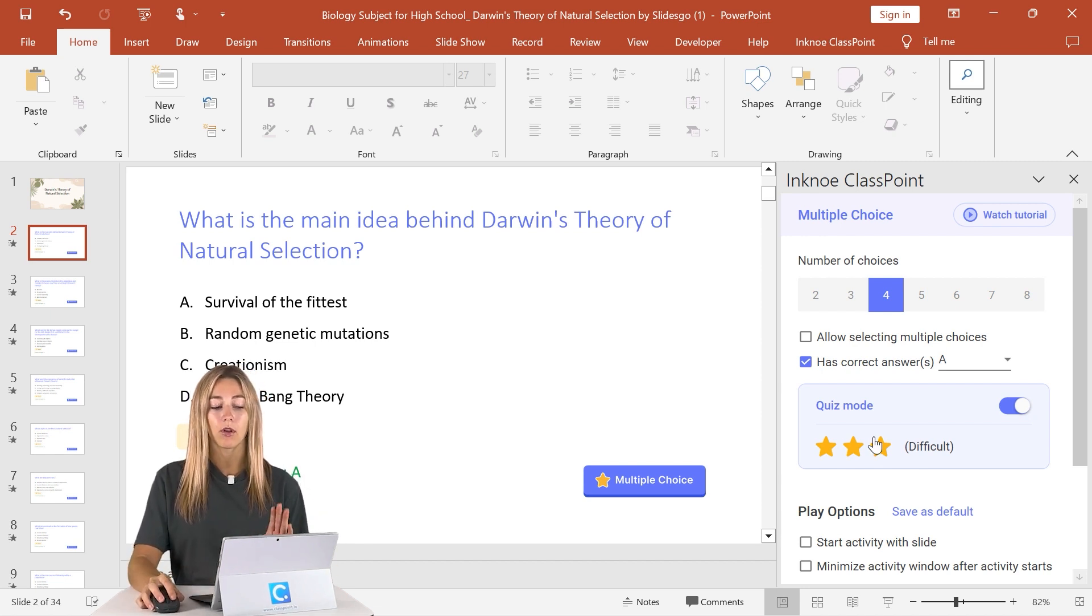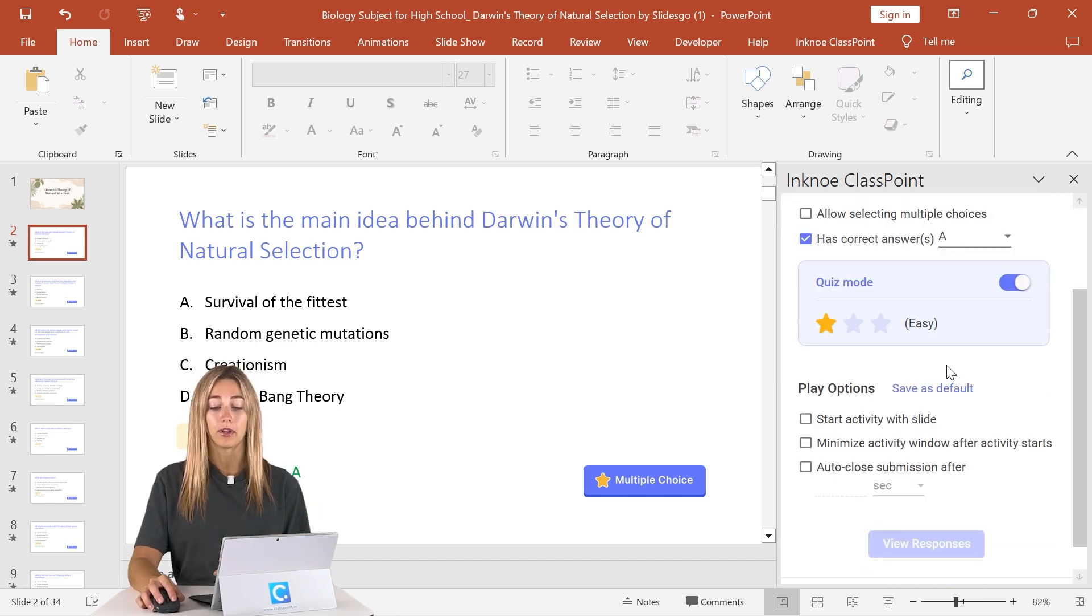So this question is pretty simple, it's our first one, so we're going to have it be an easy difficulty level here. And so anyone who answers correctly with the answer choice A will receive one star. You can keep track of all of these scores through our leaderboard, which we'll check out in a little bit. Then if you scroll down, you'll see our play options.